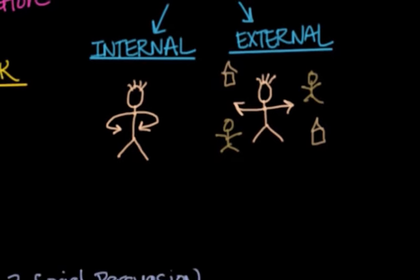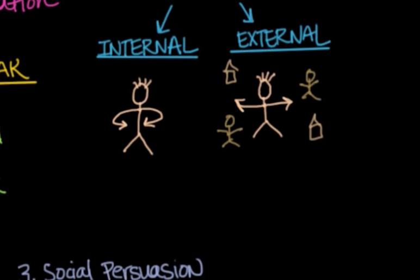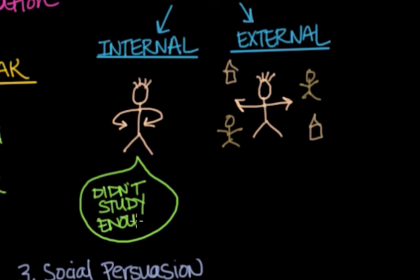If a person with an internal locus of control does not perform as well as they wanted to on a test, for example, they would blame it on lack of preparedness on their own part. If they performed well on a test, then the outcome would be attributed to their ability to study.